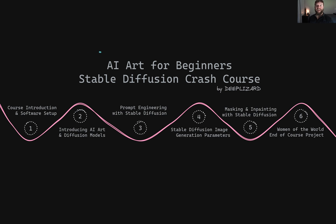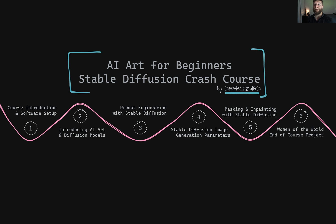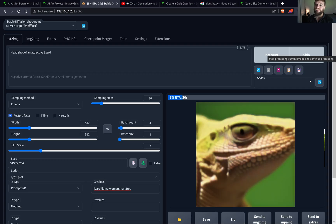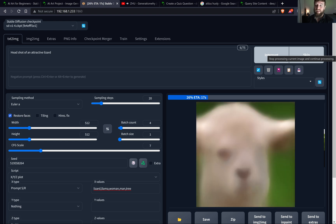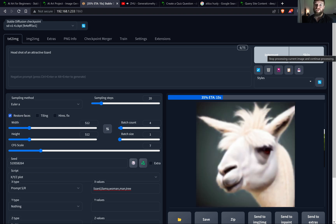Welcome to this DeepLizard course on AI art with Stable Diffusion. My name is Chris and we are delighted to have you with us. In this course, we will get hands-on experience with artificial intelligence using the cutting-edge tools of generative AI. In particular, we will be using Stable Diffusion, the king model that has caused so much buzz in our society with generative AI art, and we will also be using the very popular Automatic1111 interface. This makes working with Stable Diffusion a breeze.